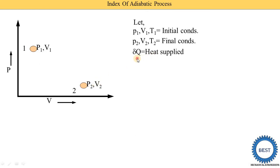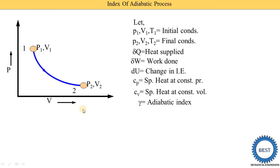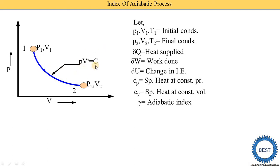The next parameter: del Q means heat supply, del W is work done, and du is the change in internal energy. Cp is specific heat at constant pressure, Cv is specific heat at constant volume, and gamma is the adiabatic index that we are going to derive — that is Cp upon Cv. We join these two states using a curve line, which is called the adiabatic process, and this process follows the rule PV raised to gamma equals constant.